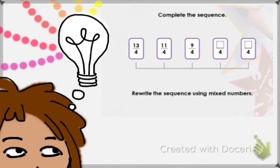Now let's complete the sequence. We have 13 over 4, 11 over 4, 9 over 4, and we need the next 2 fractions. Before we rewrite the sequence using mixed numbers, we need to fill in these 2 fractions. As you can observe, our fractions decrease by 2 each time.